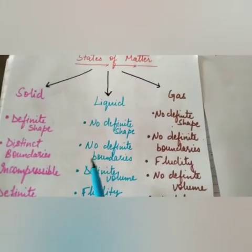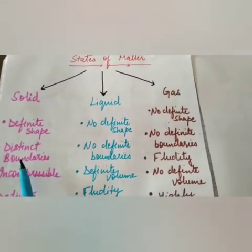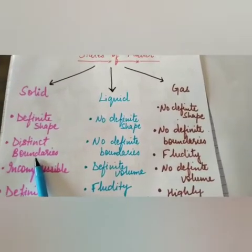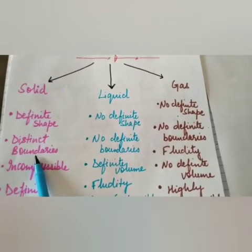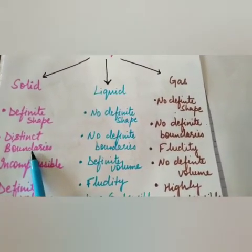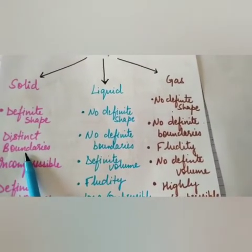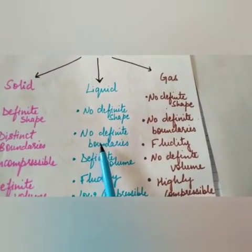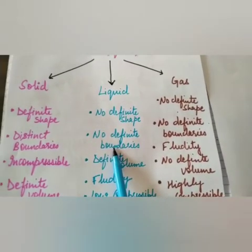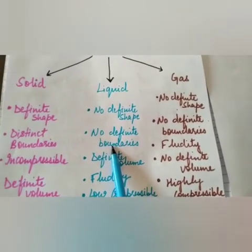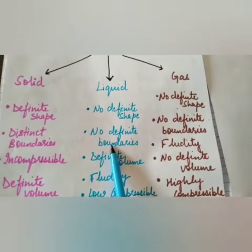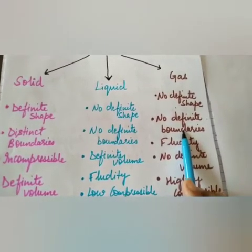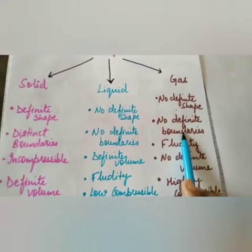Next is distinct boundaries. Solid is rigid, so it has distinct boundaries. Liquid has no definite boundaries, and similarly gas also does not have any definite boundaries.